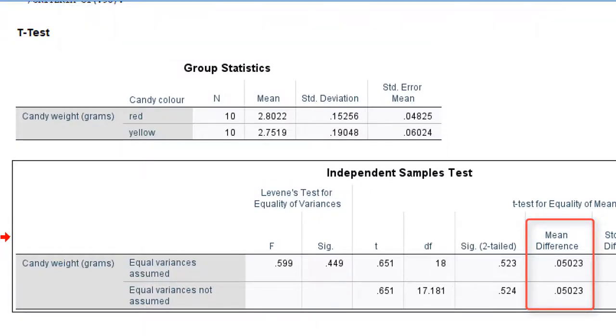To standardize the effect size, we must divide by the standard deviation. Unfortunately, the standard deviation that we need is not reported by SPSS. We could calculate it from the standard deviations reported for the two groups, but it is easier to use a shortcut.